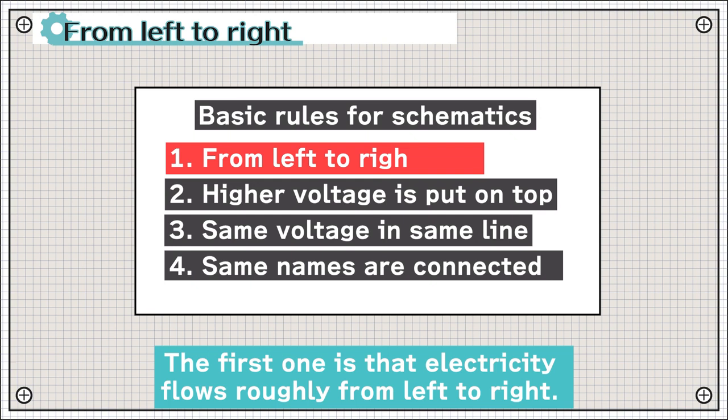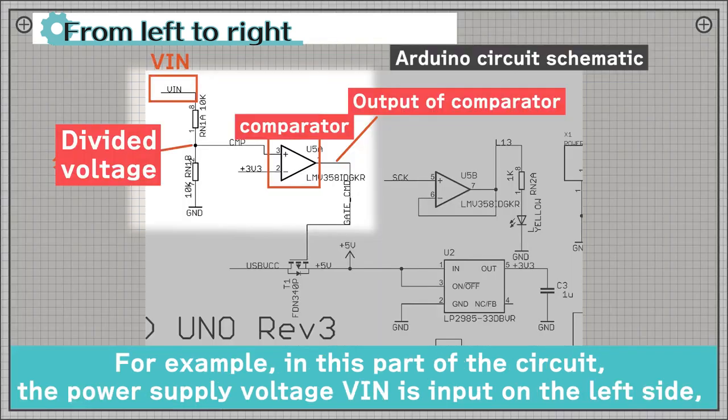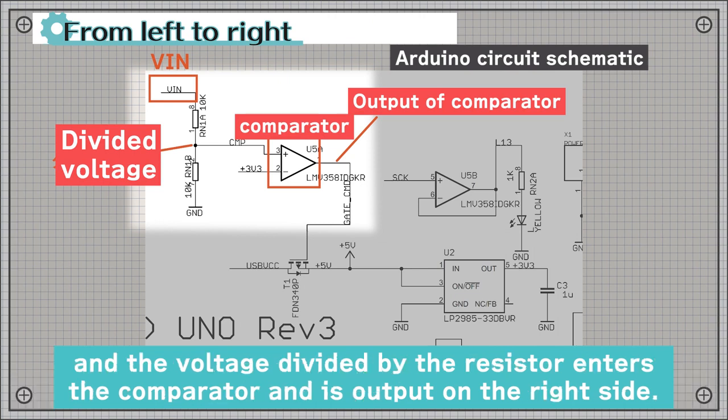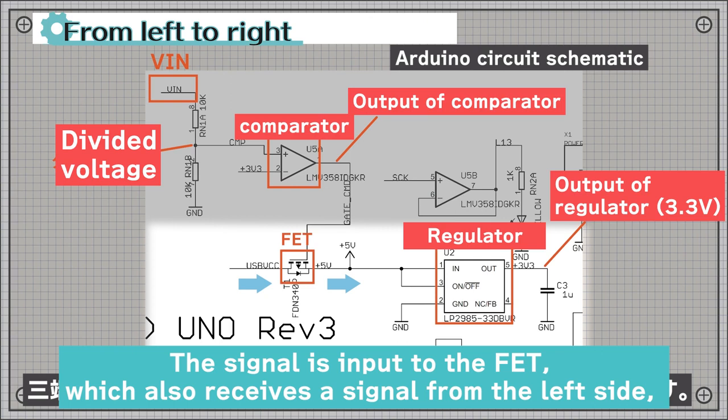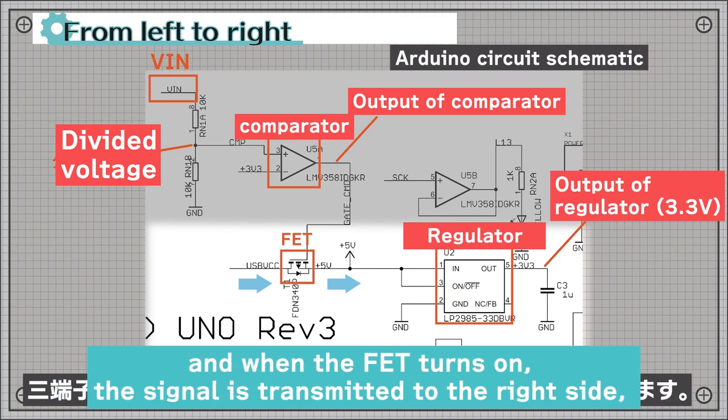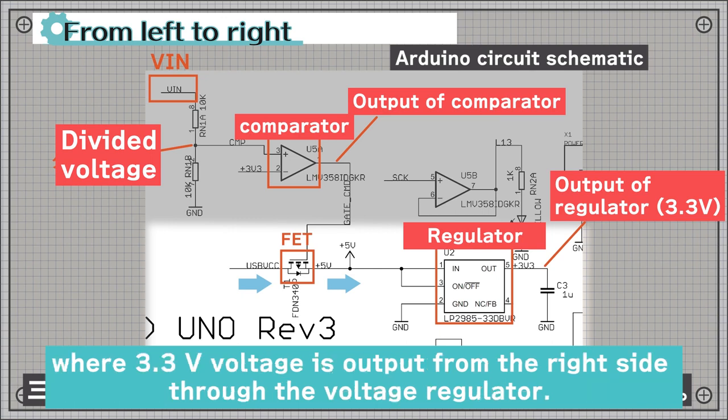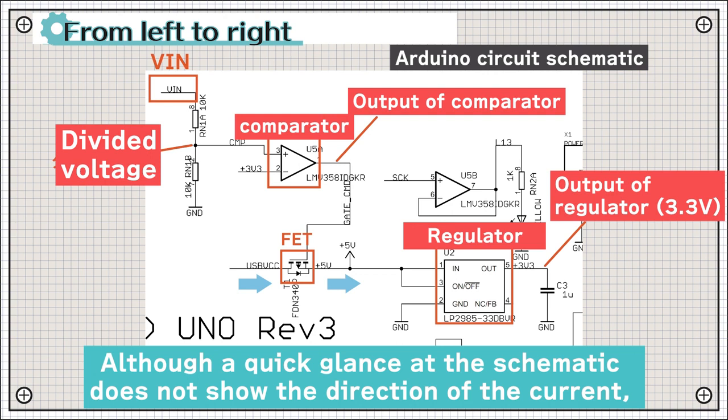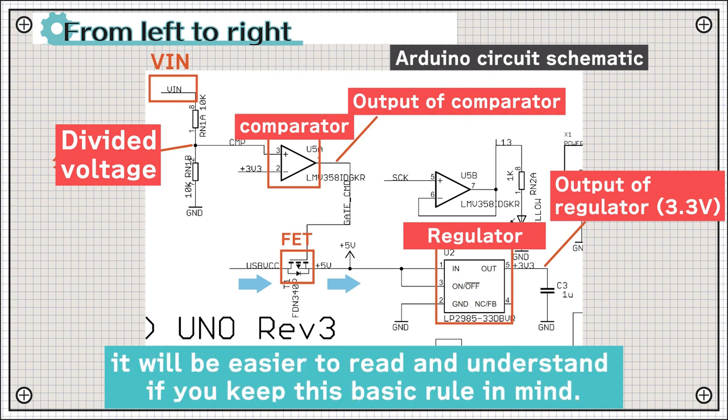The first one is that electricity flows roughly from left to right. For example, in this part of the circuit, the power supply voltage VIN is input on the left side, and the voltage divided by the resistor enters the comparator and is output on the right side. The signal is input to the FET, which also receives a signal from the left side. And when the FET turns on, the signal is transmitted to the right side, where 3.3V voltage is output from the right side through the voltage regulator. Although a quick glance at the schematic does not show the direction of the current, it will be easier to read and understand if you keep this basic rule in mind.